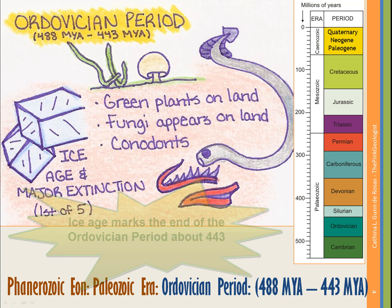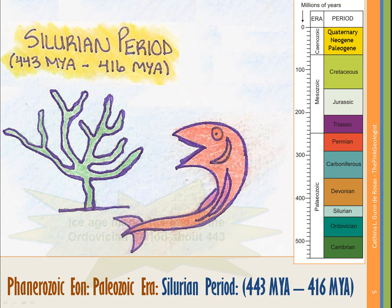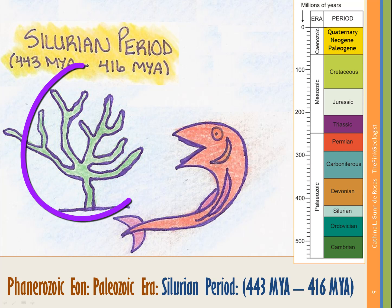Now as we move on, we're going to talk about the Silurian period. This occupies the time from 443 million years ago to 416 million years ago. We're still in the Phanerozoic Eon and the Paleozoic Era. The Silurian period is defined by the first vascular plants.